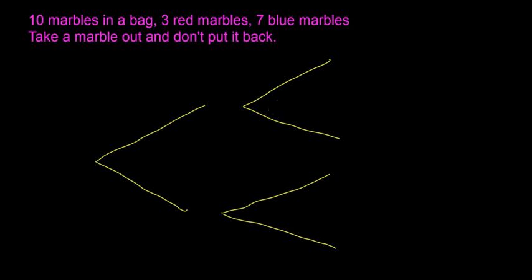For the first draw, the probability of getting a red marble is three over ten, and the probability of getting a blue marble is seven over ten. So the first branch is red at three over ten and the other branch is blue at seven over ten.